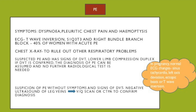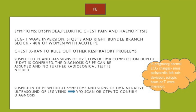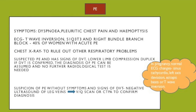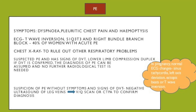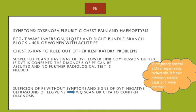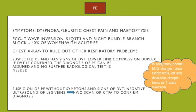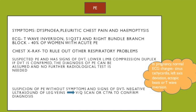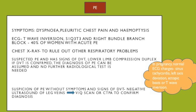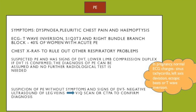For PE, symptoms include shortness of breath, pleuritic chest pain, and haemoptysis. ECG can show T-wave inversion, S1Q3T3 pattern, and right bundle branch block. These findings can be present in 40% of women with an acute PE.